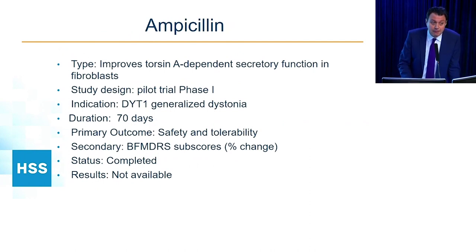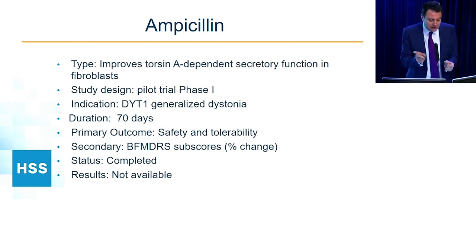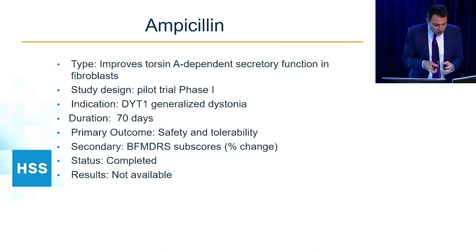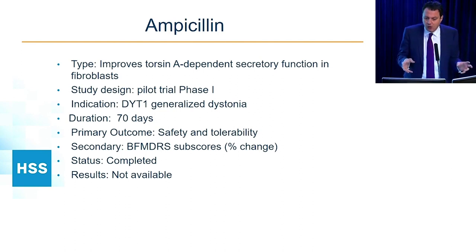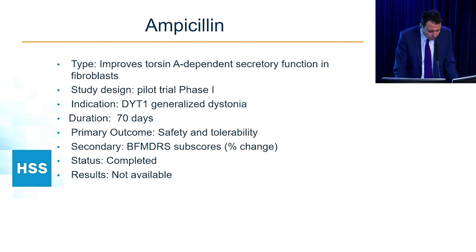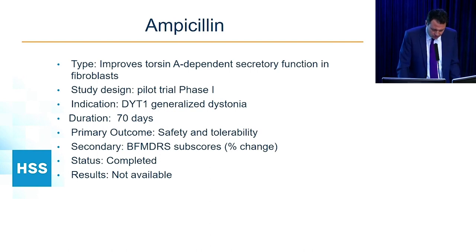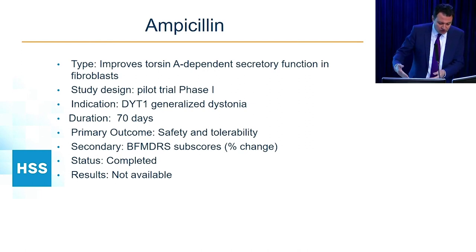Ampicillin — normally an antibiotic for infections — was explored because of a hypothesis that it might improve torsin-A independent secretory function in fibroblasts. Torsin-A is the gene implicated in the pathophysiology of DYT1 genetic dystonia affecting children. A pilot phase one trial lasting 70 days looked at safety and tolerability only. Results are not yet available, but phase two recruitment is being planned — suggesting safety results were acceptable.